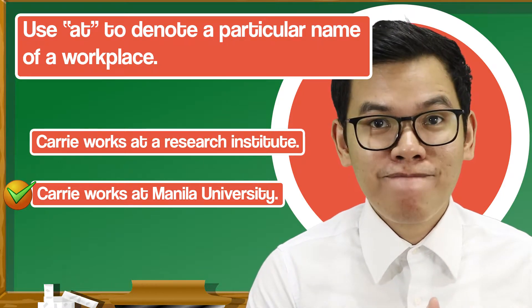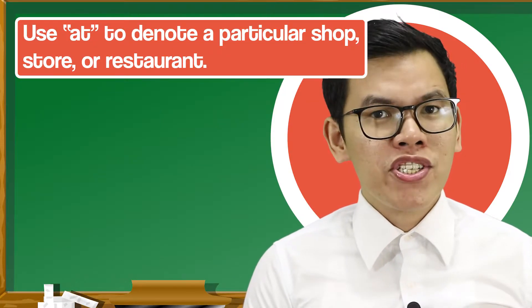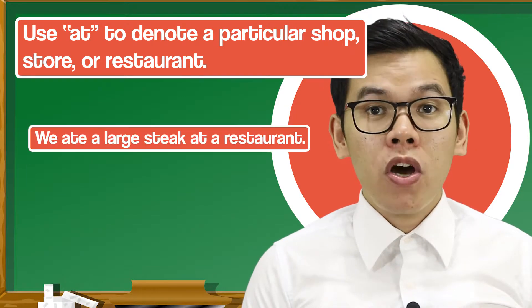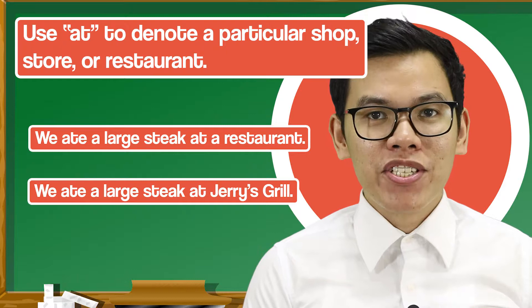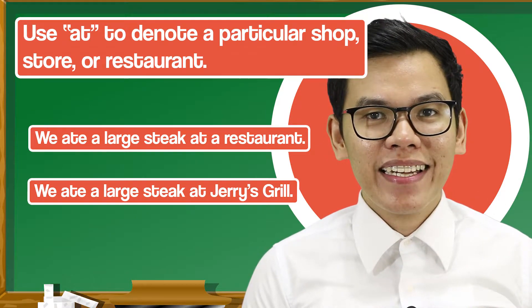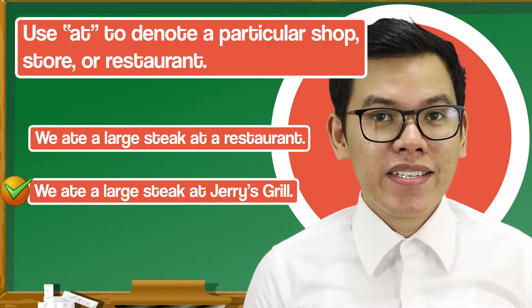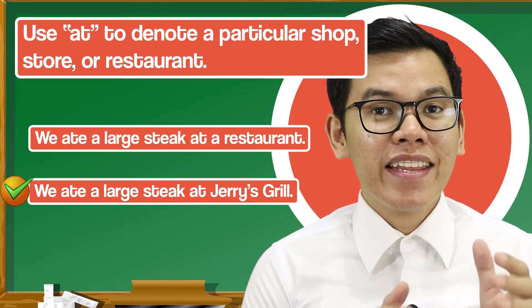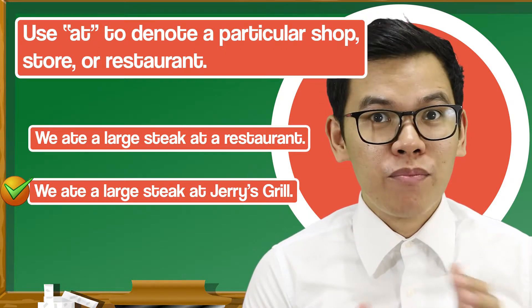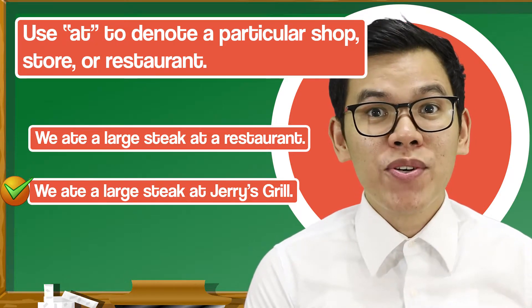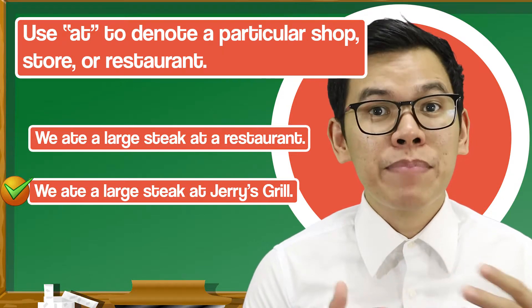The next rule is we use 'at' to refer to a particular name of a shop, store, or restaurant. 'We ate a large steak at a restaurant' versus 'We ate a large steak at Jerry's Grill.' The second sentence is correct because 'restaurant' is a generic name, whereas 'Jerry's Grill' is a specific name.